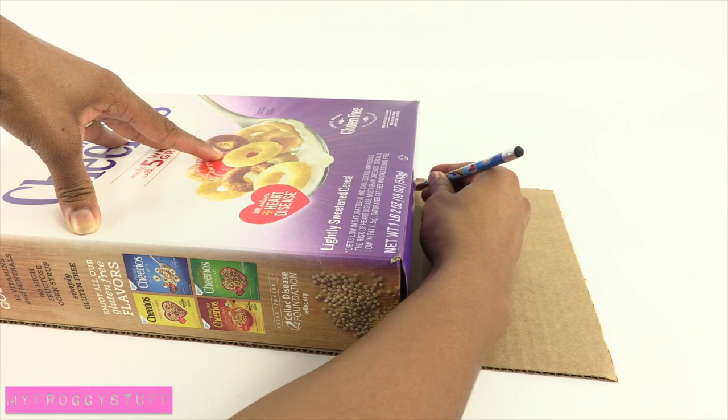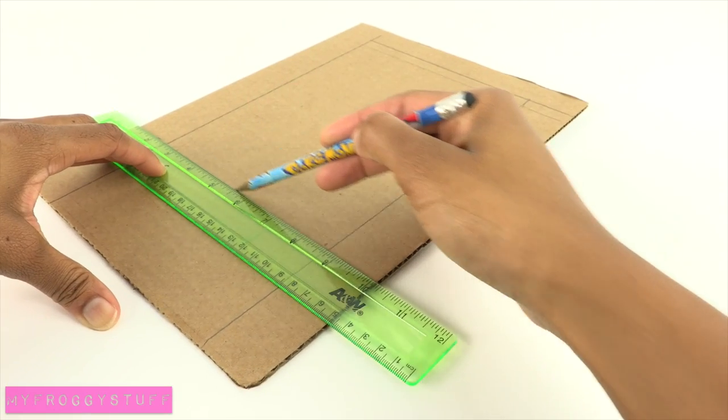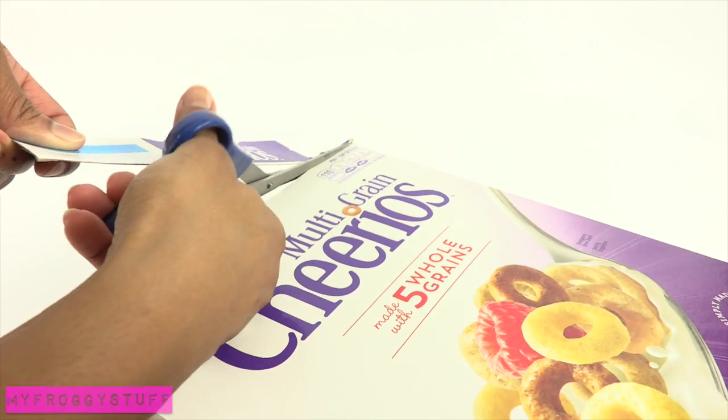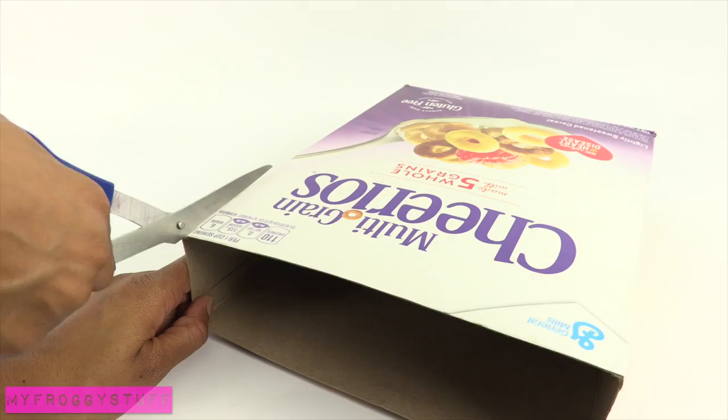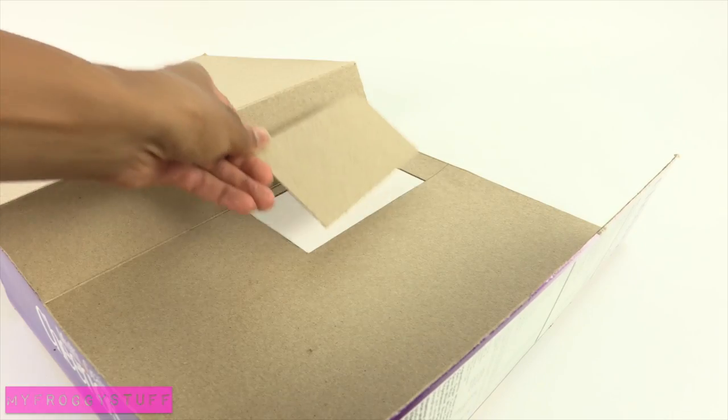I start by tracing the cereal box onto a piece of cardboard. Cut it out, sketch a large double door, cut out the windows, remove the tabs from the top of the box, cut down one side so it can open up, cut out a window.